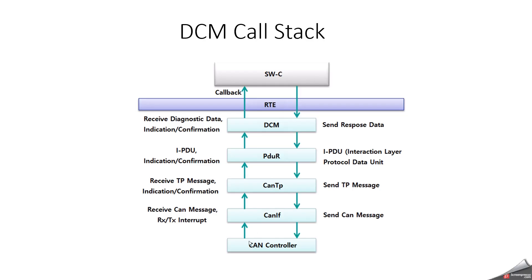This is the general DCM call stack. It starts from the CAN controller and reaches the software component. The CAN controller is part of the MCAL layer, and the message goes to the CAN interface, then CANTP, then PDUR, and then reaches DCM. Inside DCM we have the three sub-layers, then from there it goes to RTE, and finally reaches the software component. In the software component, data is packed, then the same path is followed in reverse via RTE, DCM, PDUR, CANTP, CAN interface, and CAN controller. In CANTP we check complete frame handling, and in PDUR there is configuration for whether the message routes to DCM or another module.